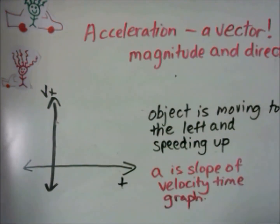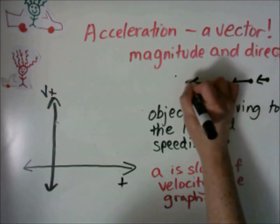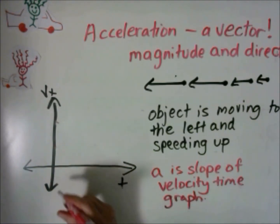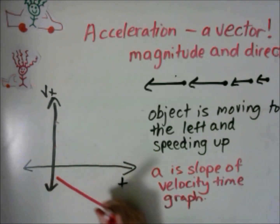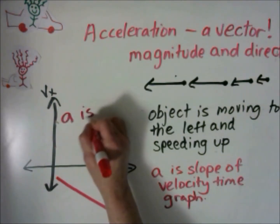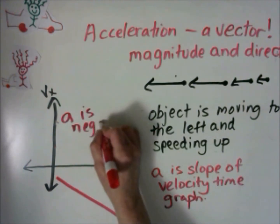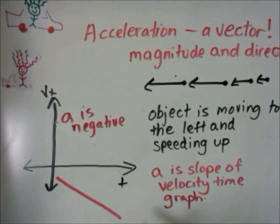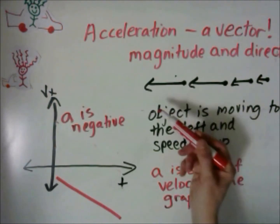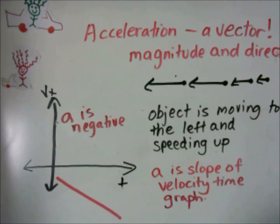An object is moving to the left and speeding up. Its motion diagram looks like this. Moving to the left, its velocity will be negative. And it is speeding up, so its velocity is going further from zero. Its graph will look like this — the slope of this line is negative, meaning acceleration is negative. This is one of the cases that often gets people, because they think if it's speeding up, it must have positive acceleration. But because it's moving to the left and speeding up, it actually has a negative acceleration.